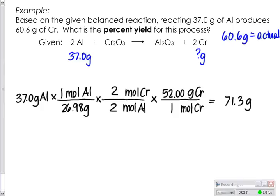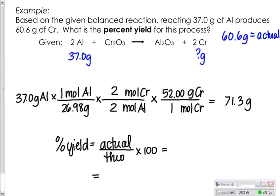That is your theoretical yield. To solve for the percent yield, you need actual divided by the theoretical and multiply by 100. So actual was given in the problem of 60.6 grams. The theoretical we just solved for is 71.3 grams. We multiply by 100. Our calculator gives us like 84.99 something percent. So with three significant digits, we want to call that 85.0 percent. And that's how you do percent yield.